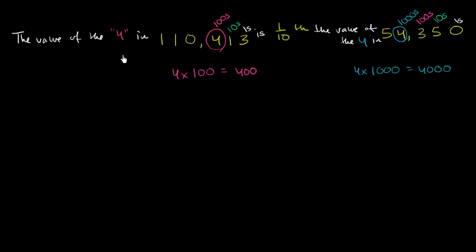I know it's a little bit weird sentence. The value of the four in 110,413 is one tenth the value of the four in 54,350.